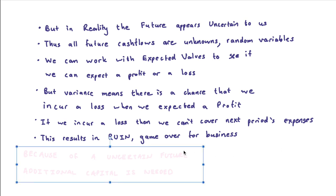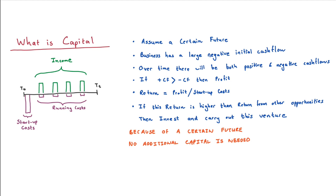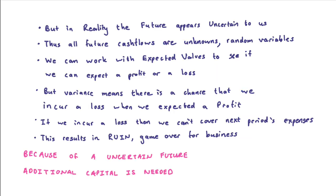Because of an uncertain future, additional capital is needed by the business to prevent ruin. No matter how well you think you've understood the market or done your research, unexpected things can happen — like the coronavirus or something else — that can put all your business plans into a shamble. Therefore you do need additional capital to try and prevent ruin. The big lesson here is that if the future were certain, we wouldn't need any additional capital other than what we've budgeted for, but because the future is uncertain, we need to set aside more capital in case the unexpected happens.